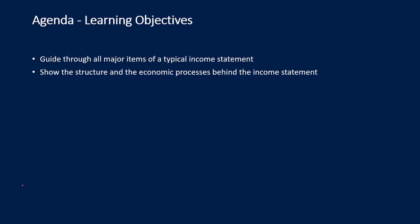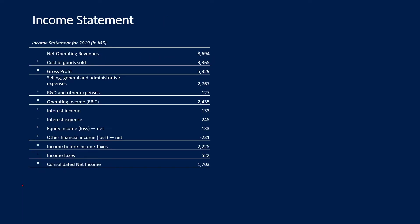Let us have a first view on a typical income statement. Here we see a typical income statement of a large company. First of all, we see it is written 'income statement' for 2019, which means it is for the full year 2019 — not only to a certain point of time, but for the whole financial year. We see that this income statement is in million dollars, which indicates this is really a huge company, since it has 8.6 billion dollars of net operating revenue.